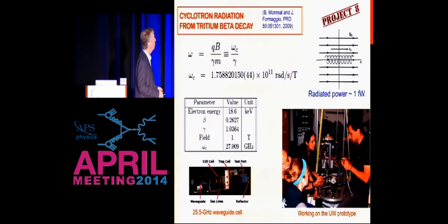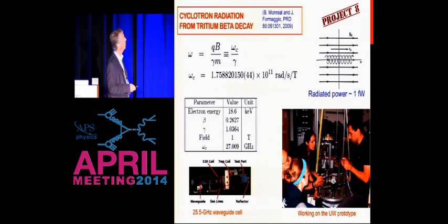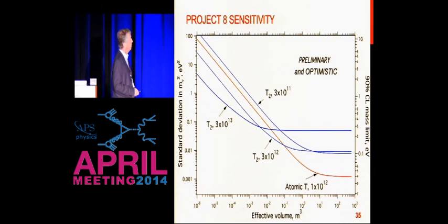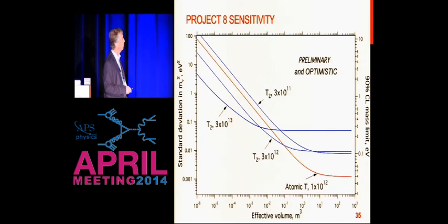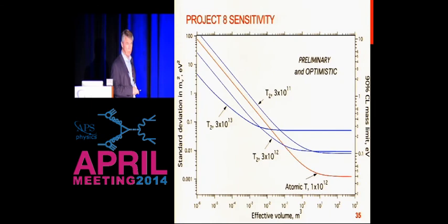There's a new idea which was proposed by Ben Monreal and Joe Formaggio to use cyclotron radiation emitted by betas in a uniform magnetic field. This is a very nice idea because it allows you to look at a very large source. This shows work going on at the University of Washington on a prototype to check this out. This shows the potential of this idea. It has all of the ingredients that you want to see in a pre-conceptual pre-proposal — it's both preliminary and optimistic — but I think it actually shows the potential of the method.